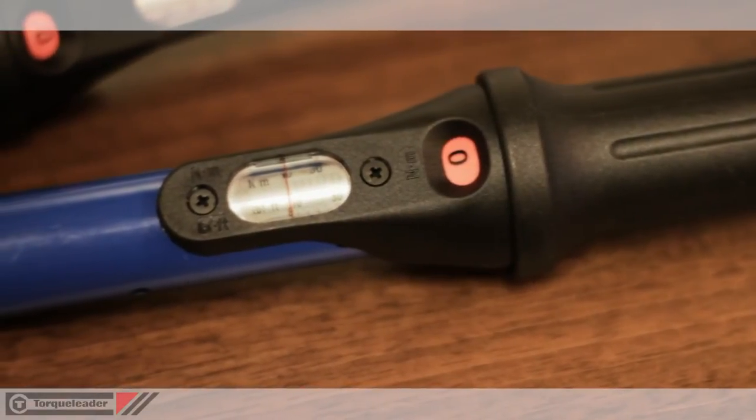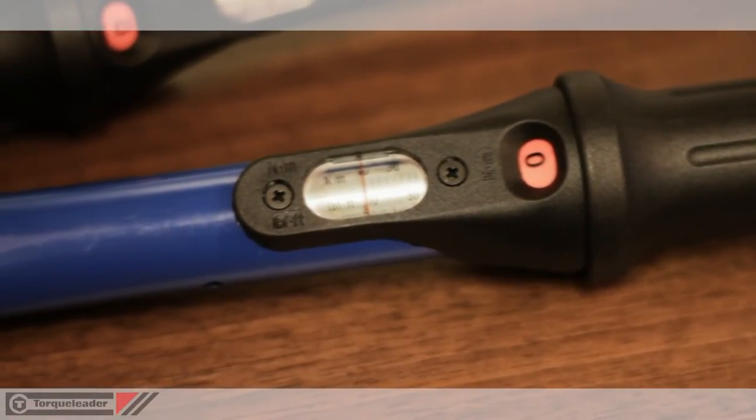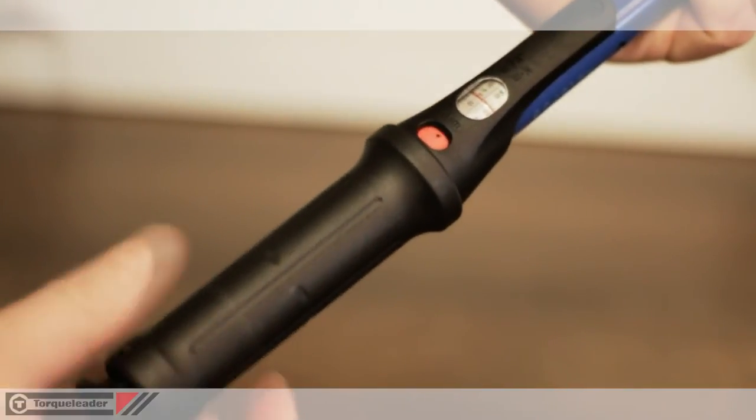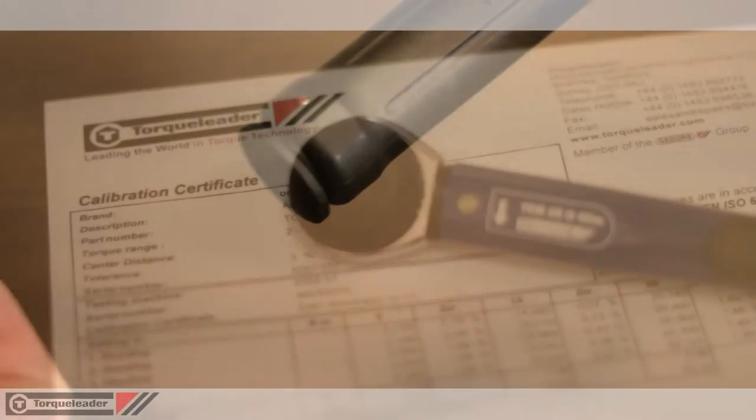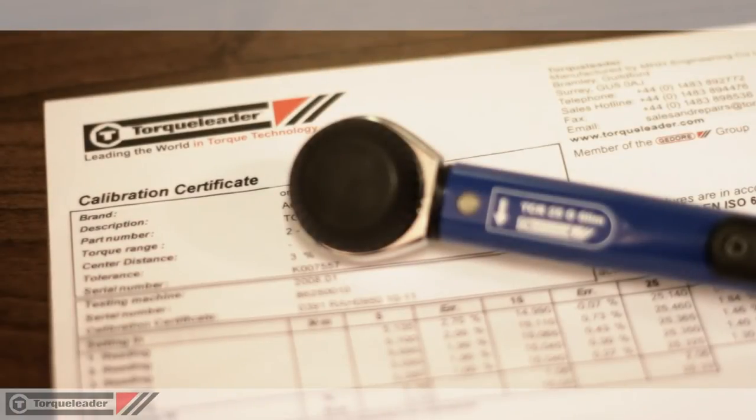The torque setting can be easily read off of the micrometer scale and the adjustment lock mechanism prevents accidental adjustment during operation. Each wrench is supplied with a certificate of calibration.